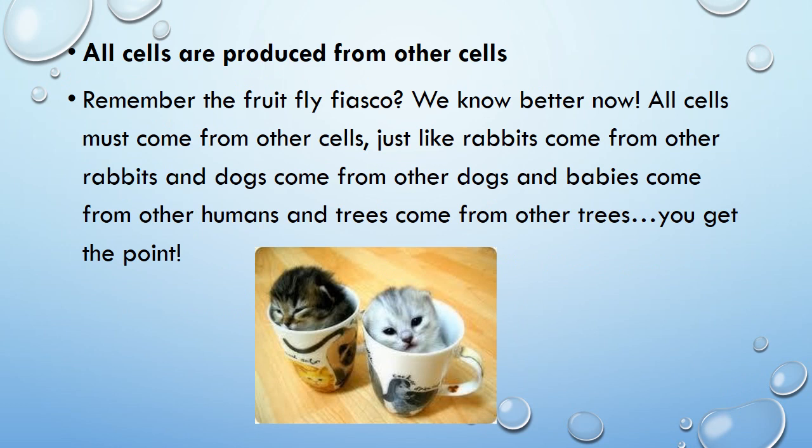Finally, all cells are produced from other cells. Remember the fruit fly fiasco? We know much better now. All cells must come from other cells — the same idea that all rabbits come from other rabbits, puppies come from dogs, babies come from humans, and tree seedlings come from other trees. Cells don't just magically appear in the universe. They have to come from other cells.